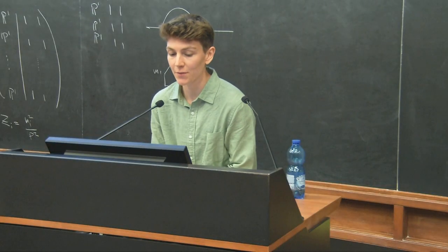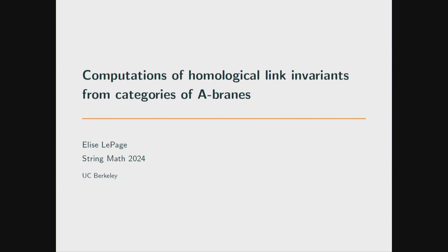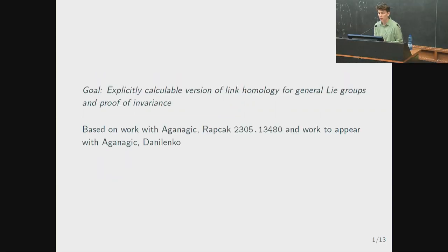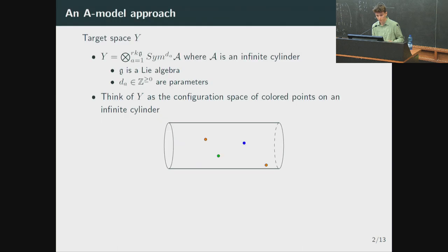Elise Lepage will talk about computations of homological link invariants from categories of A-branes, building on Mina's talk from yesterday. This is joint work with Mina and Miroslav Rapčák and work to appear with Mina and Ivan Danilenko. Knot invariants come from A-branes: we choose a configuration of A-branes and knot invariants come from Hom spaces from one A-brane to another. The target space is based on a Lie algebra—some number of symmetric products of an infinite cylinder, where the number of symmetric products is the number of roots of the Lie algebra—interpretable as the configuration space of colored points in an infinite cylinder.